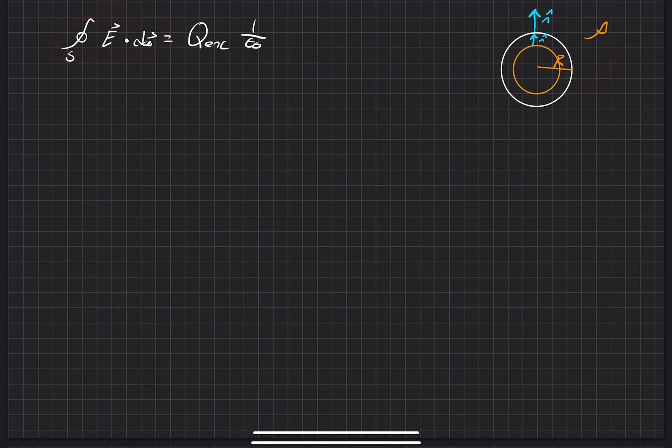So this dot product actually ends up just becoming a multiplication. So we'll take the magnitude of the electric field and then the surface area of our Gaussian surface. The surface area for that Gaussian surface is equal to 4 pi r squared, and that is equal to the charge that's enclosed, proportional to 1 over epsilon naught.